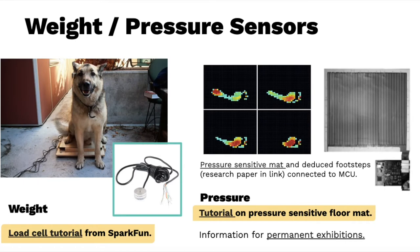Weight sensors can be useful for triggering doors to open when someone is standing on a surface, or for effects that change based on how many people are in a room. Weight sensors are usually called load cells and are rated for different weights. Pressure sensors usually come as FSRs — force sensitive resistors — great for inserting into objects to detect when they've been pushed. They can be pretty fragile though, so install them securely and be aware they may need ongoing maintenance.